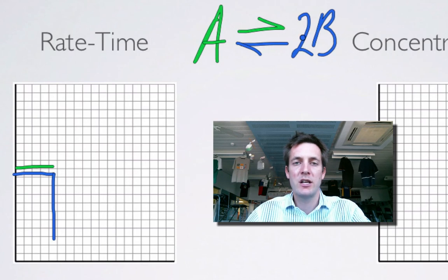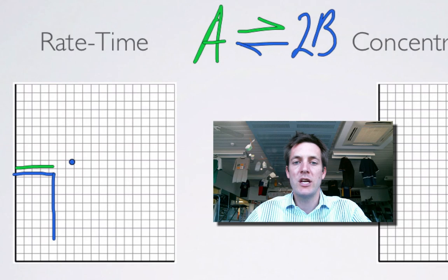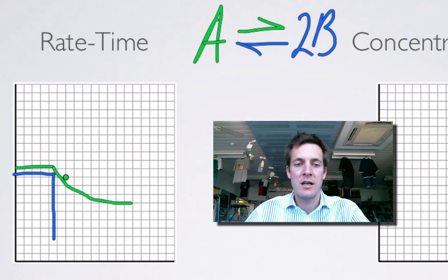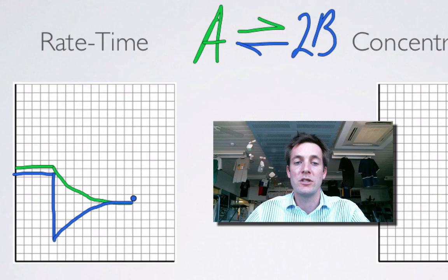If I remove products, Le Chatelier's principle says I've got to put some back in, so the forward reaction's got to be favoured. The rate of the forward reaction doesn't change at that moment, because B is not involved in the forward reaction — it's just the product. So the forward reaction is going faster now, it's been favoured, even though it hasn't itself increased in rate. Then as we use up A to form these products, the rate of the forward reaction will gradually fall, the rate of the backward reaction will gradually rise, and when they equal each other they're at equilibrium again.